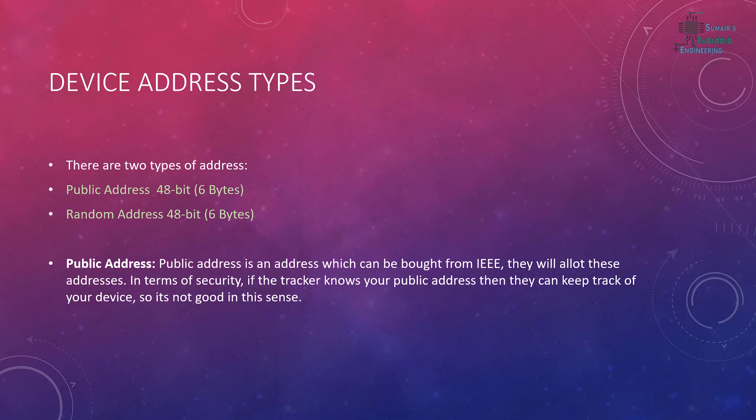Now let's look at address types. There are two main types of addresses in Bluetooth devices: the first is the public address, and the second is the random address. Both are 48 bits, or six bytes, in length.